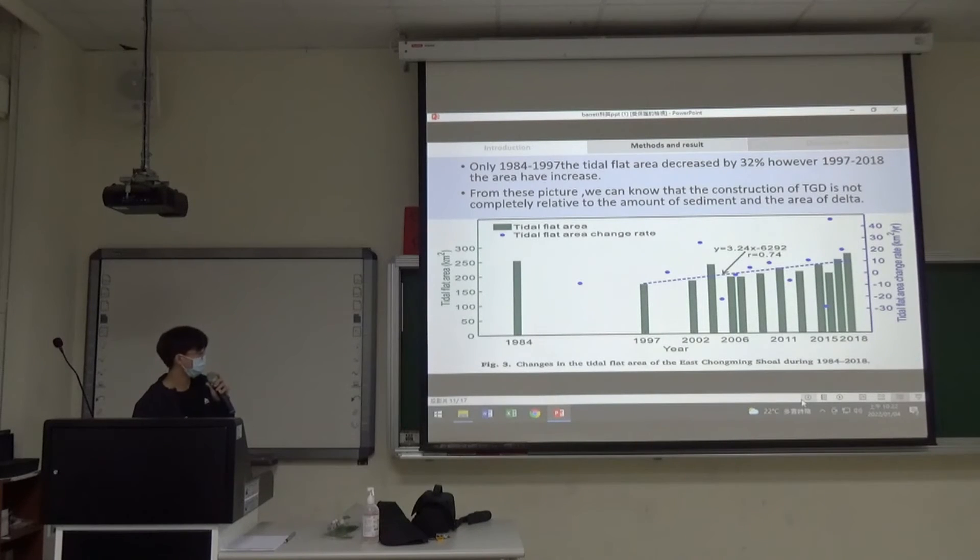Let's see the next picture. The x-axis is year from 1984 to 2018, and y-axis is tidal flat area. The blue bars represent tidal flat area change rate. You can see that 1984 to 1997, before and after TGD was built, only this period was decreasing. But 1997 to 2018 was increasing. From this picture we can know that the construction of TGD is not completely related to the amount of sediment and the area of delta.